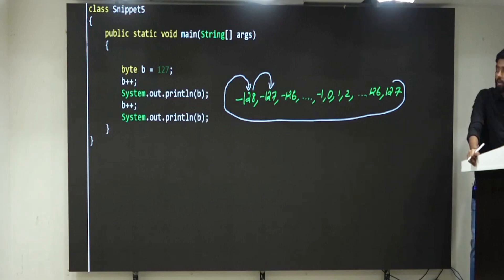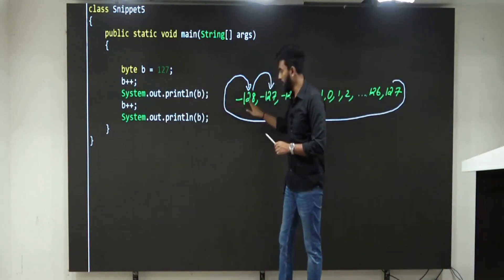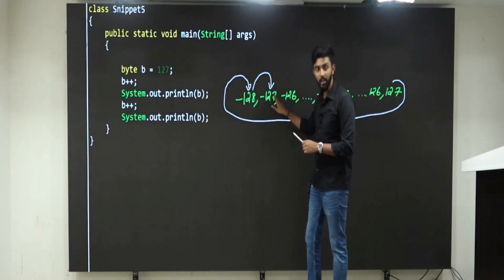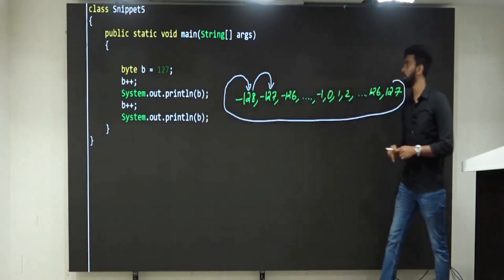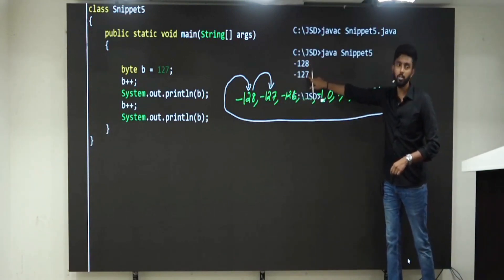Are you able to understand? Hence, first time you printed b, minus 128. Second time you printed b, minus 127. Really sir? Execute now, watch it. Minus 128, minus 127.